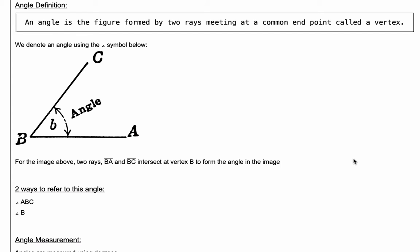An angle is the figure formed by two rays meeting at a common endpoint, and the endpoint is called the vertex. So let's look at the image here for the angle. This right here is the angle, the space between the two rays. So we have ray BA and ray BC that meet at the vertex B, and it forms the angle B.